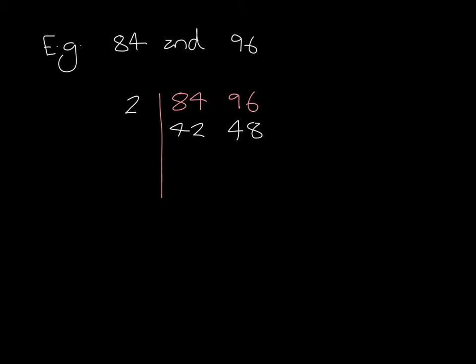42 and 48 have a factor of 2 in common. 2 multiplies by 21 to produce 42, and it multiplies by 24 to produce 48. 21 and 24 have a factor of 3 in common. 3 times 7 is 21, and 3 multiplied by 8 is 24.